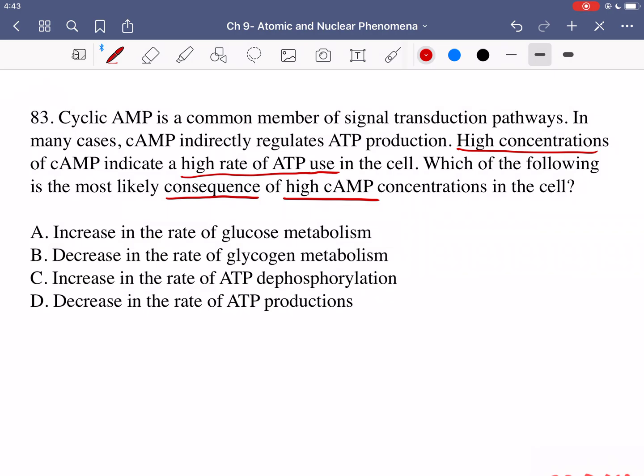Option A is saying there's going to be an increase in the rate of glucose metabolism and this is actually correct. It makes sense. If we have a low ATP level then what we need to do is do something which increases our energy level and have some ATP being produced. Therefore glucose metabolism would be a correct consequence if the cell detects high cAMP.